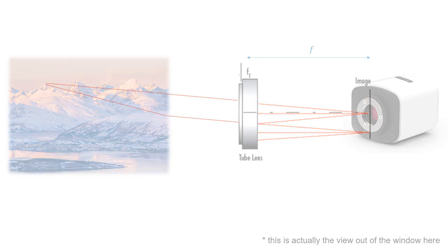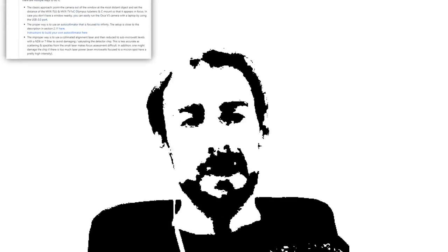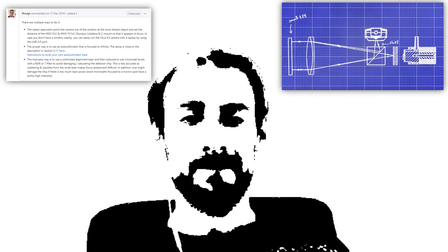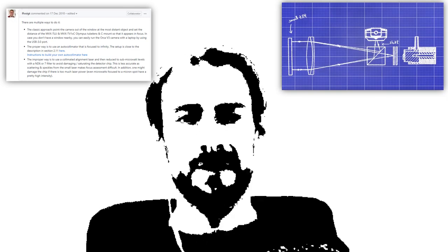The most proper way to align a tube lens would probably be the use of an auto-collimator. You can build one yourself, it's actually not that hard. Here's a tutorial. Happy tinkering and see you next time.